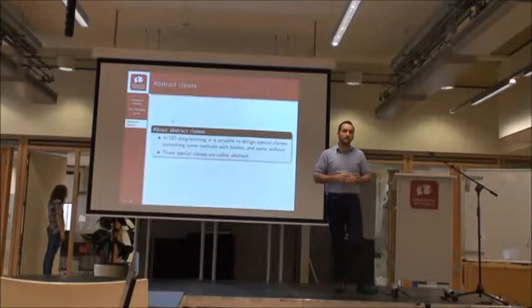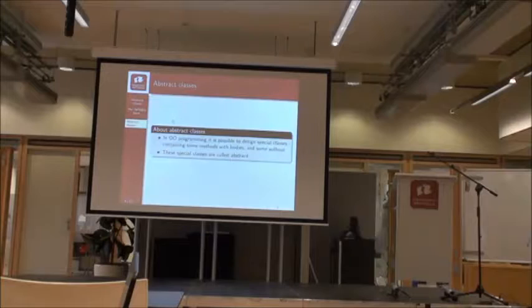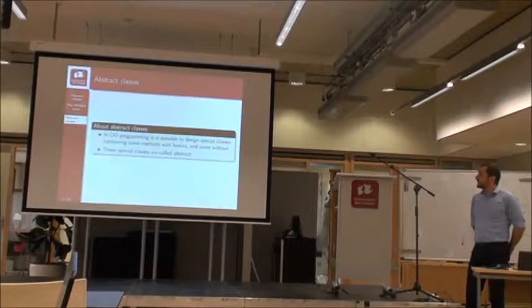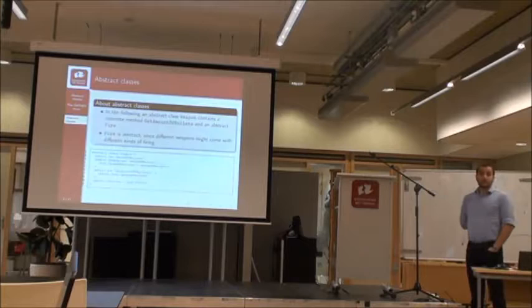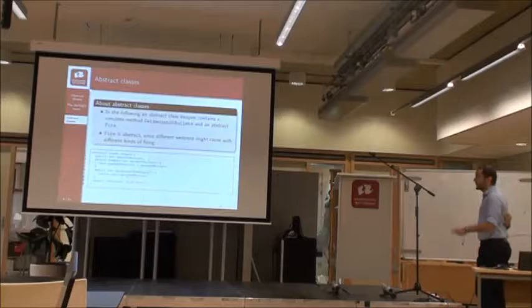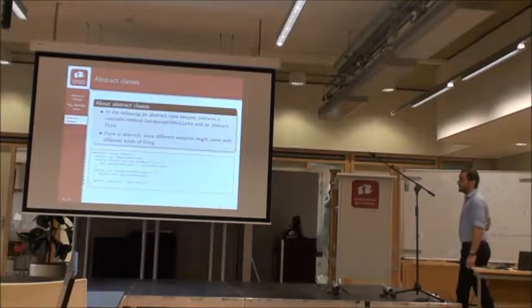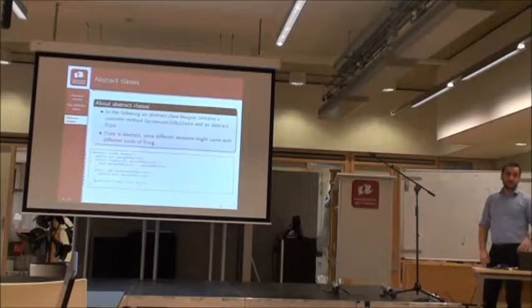Abstract classes allow you to design special classes that contain some methods with bodies and some without. These are called abstract classes. For example, here is the Weapon abstract class, which contains a field — an integer called 'amountOfBullets' — a constructor where you set up the amount of bullets, and a getter method 'getAmountOfBullets' that has a body and returns the amount. Then we leave 'fire' as just a signature, as if it were an interface.